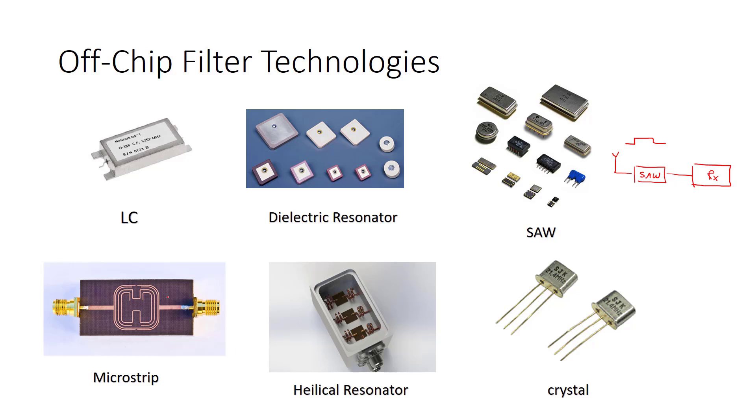They have a response like this, a bandpass response, and we can select the band. They're commonly used. Microstrip, like microstrip antenna, the same technology, the helical resonator, and crystal. As you see, these filters have sizes and dimensions that are really big, so that's the problem with off-chip filters.